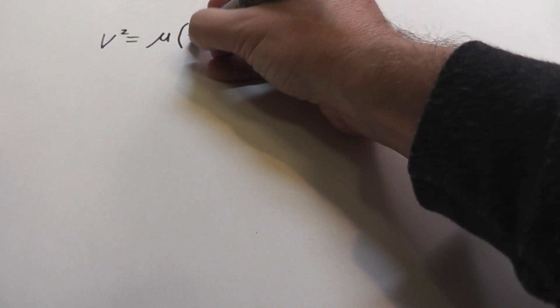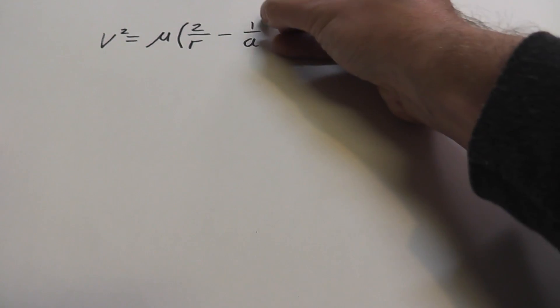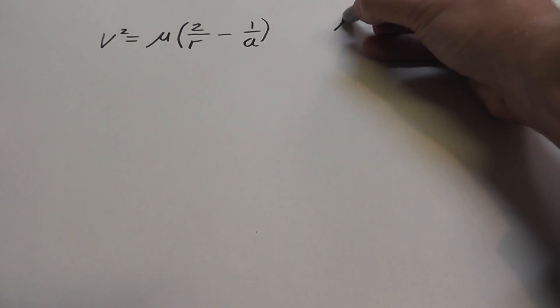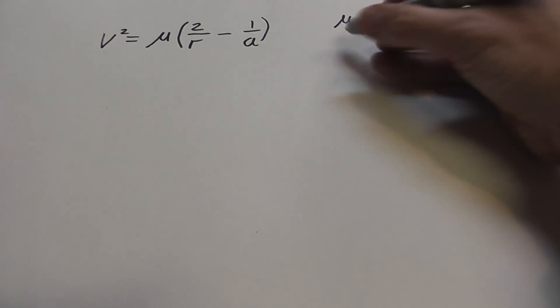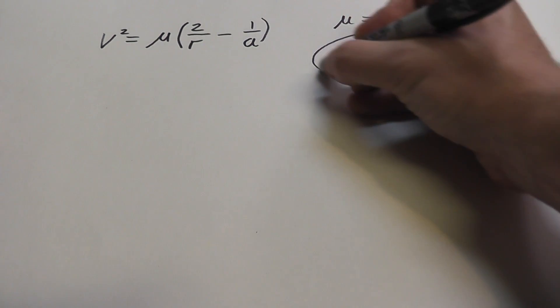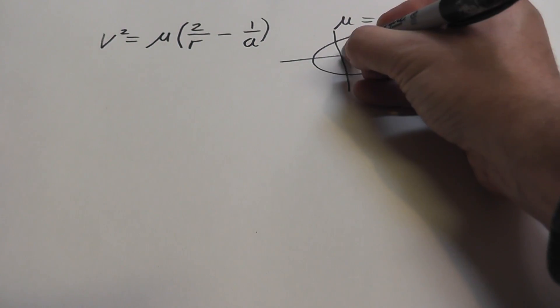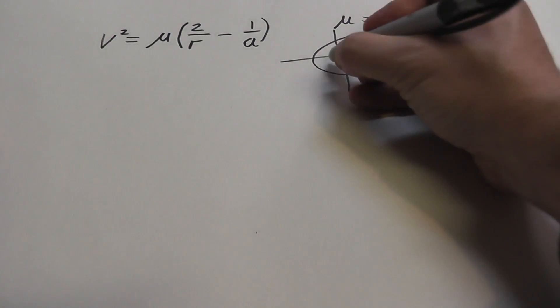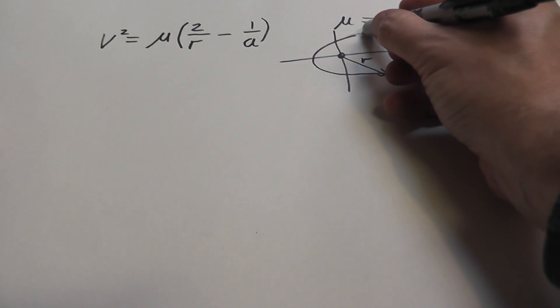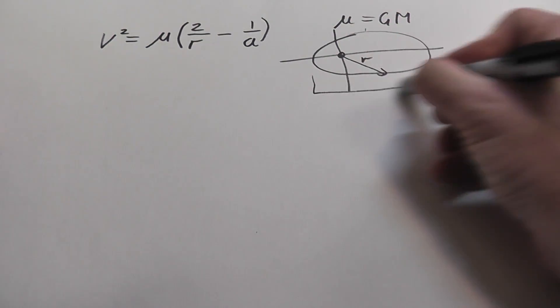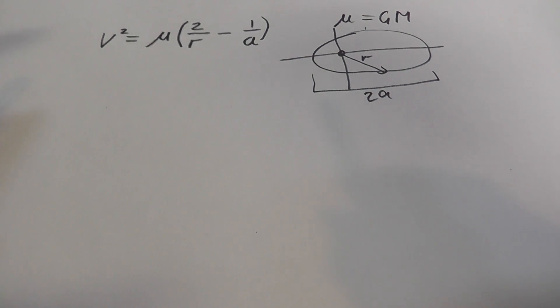V squared is equal to 2 mu times 2 over r minus 1 over a. If you remember, mu is equal to the gravitational constant times the mass of the central body. And r and a come from your elliptical orbit, where your body is here. So your r is the distance you are from the center of mass, and a is half this distance. So that's 2a here. That's called the semi-major axis.